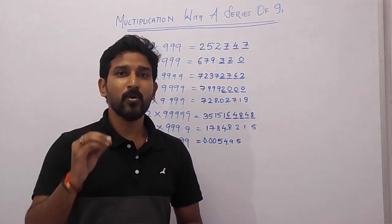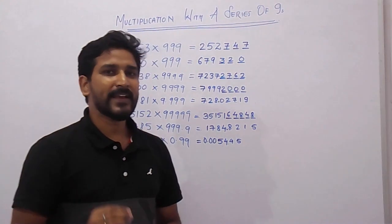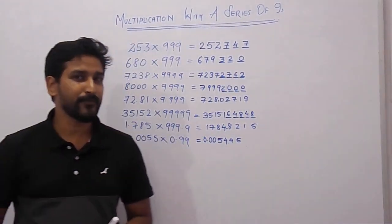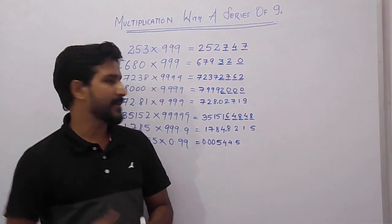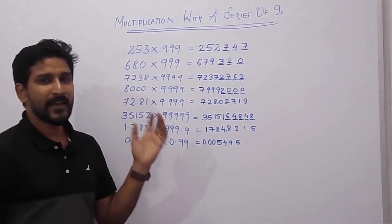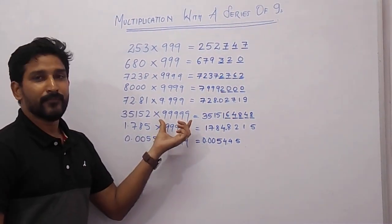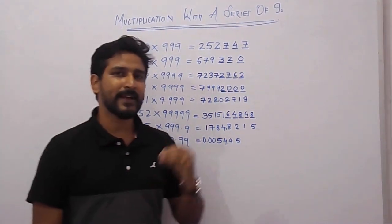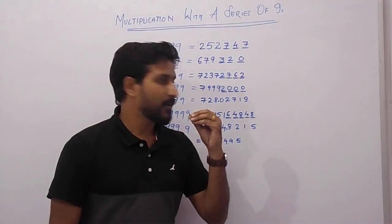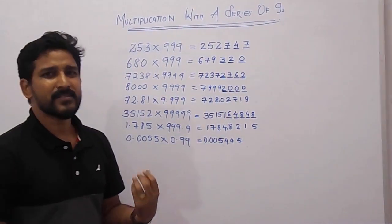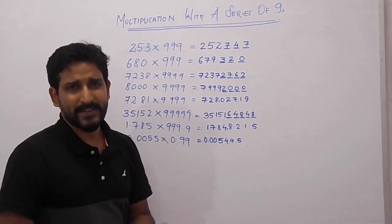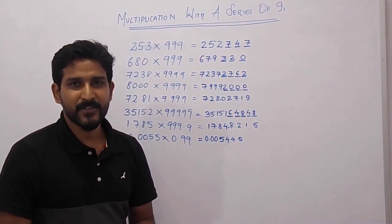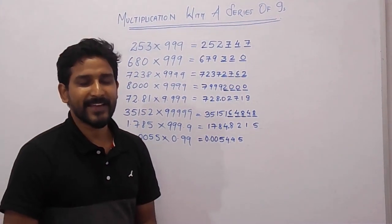So this is how we can multiply any 3-digit number with 999, a 4-digit number with 9999, and a 5-digit number with 99999. It is a very simple process — you can do this type of calculation within a few seconds, so it is very helpful in competitive examinations. Hope it will be very helpful for you. Thank you.